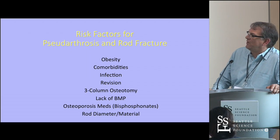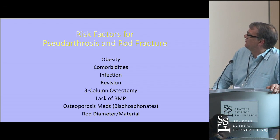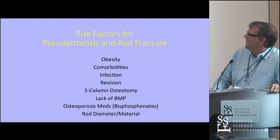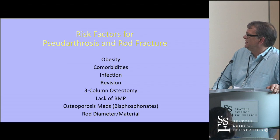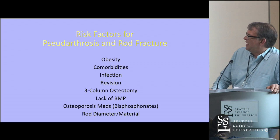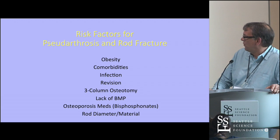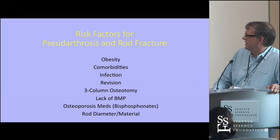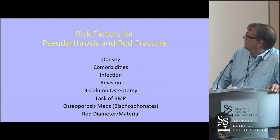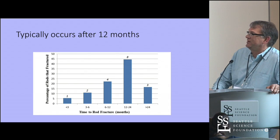Risk factors for pseudoarthrosis and rod fracture include obesity, medical comorbidity, ongoing infection, revision cases, and cases requiring three-column osteotomy. Bone morphogenic protein is one prophylactic measure. Osteoporosis medications in the bisphosphonate category are also risk factors. Bigger diameter rods and stiffer material rods do appear to reduce the risk of rod fracture, at least in the early going.